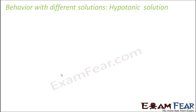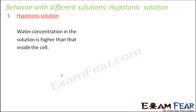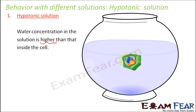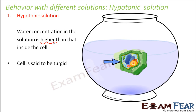The next type is the hypotonic solution, which is the opposite. In a hypotonic solution, the water concentration in the solution is higher than that inside the cell. In that case, water will start moving into the cell. When more and more water enters inside the cell, the cell starts to swell up. When water diffuses into the cell, the cytoplasm will build a pressure against the cell walls — because when too much water enters inside any object, it will start to exert pressure on the walls of the container.